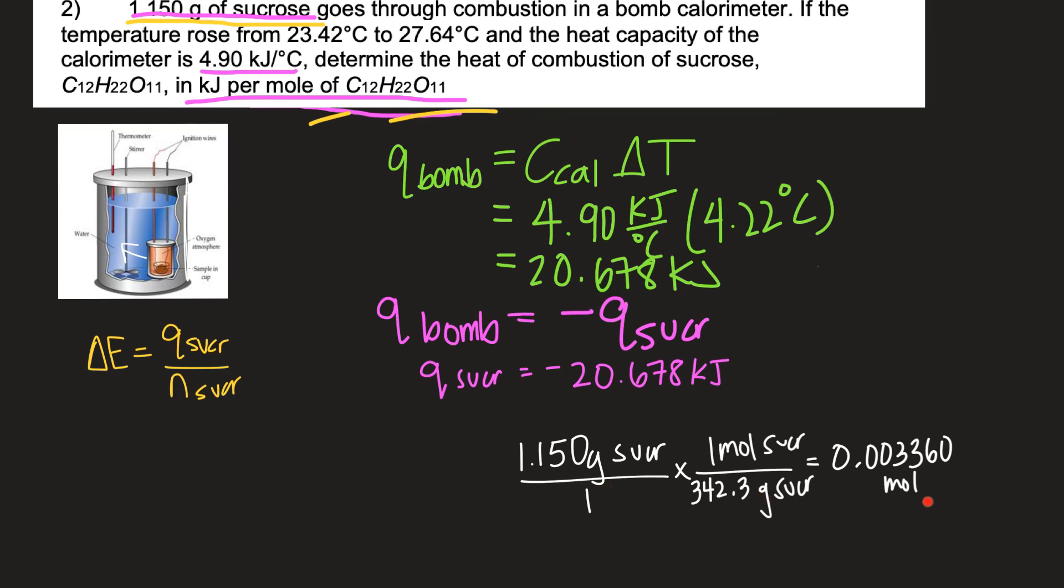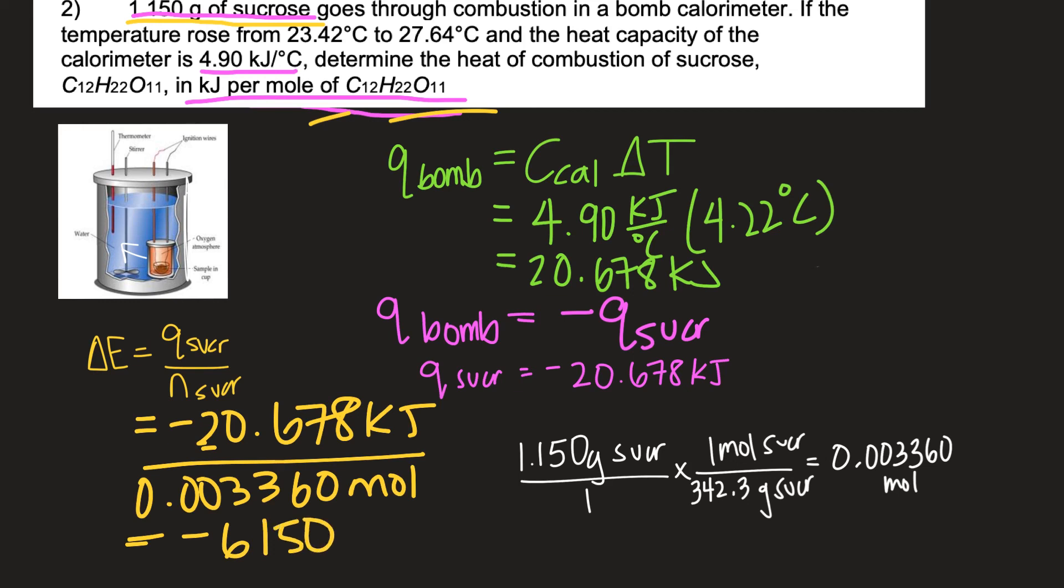If you look over here in white I did the calculation of grams to moles for sucrose using the molar mass on the periodic table so now I have my number. Let's go back and see the answer which is the last step is to simply plug in our q of the sucrose negative 20.678 kilojoules and then the moles that we just found in white. And our final answer is going to be negative 6150. I just rounded to three significant figures because I think that's what you can have in here and that's going to be in kilojoules per mole of the sucrose.